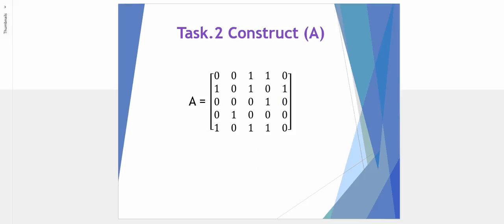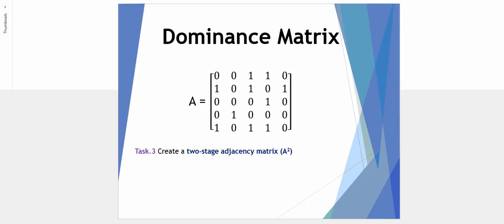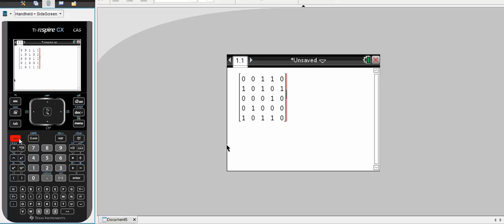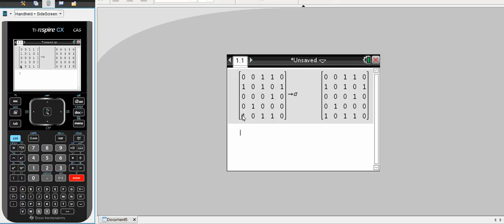The next step is to create a two-stage adjacency matrix with the symbol A to the power of 2 or A squared. Here's matrix A, our adjacency matrix. We'll just define that control variable which stores it to matrix A. So this is matrix A.